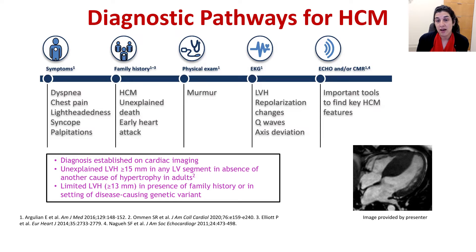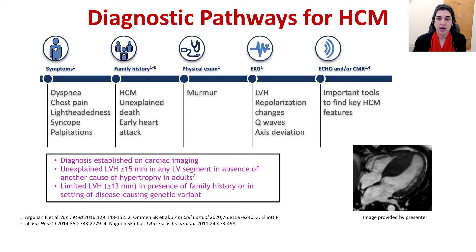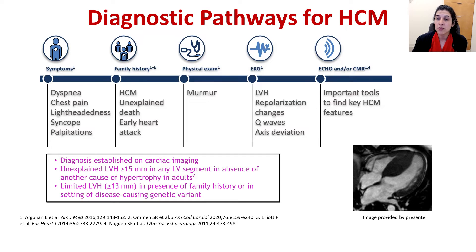More abnormalities are found on EKG, such that left ventricular hypertrophy is suspected. There may be repolarization changes, axis deviation, or Q waves found on the EKG. Ultimately, the diagnosis is made by imaging, which involves either echocardiography or cardiac MRI — both important tools in finding key features of hypertrophic cardiomyopathy.